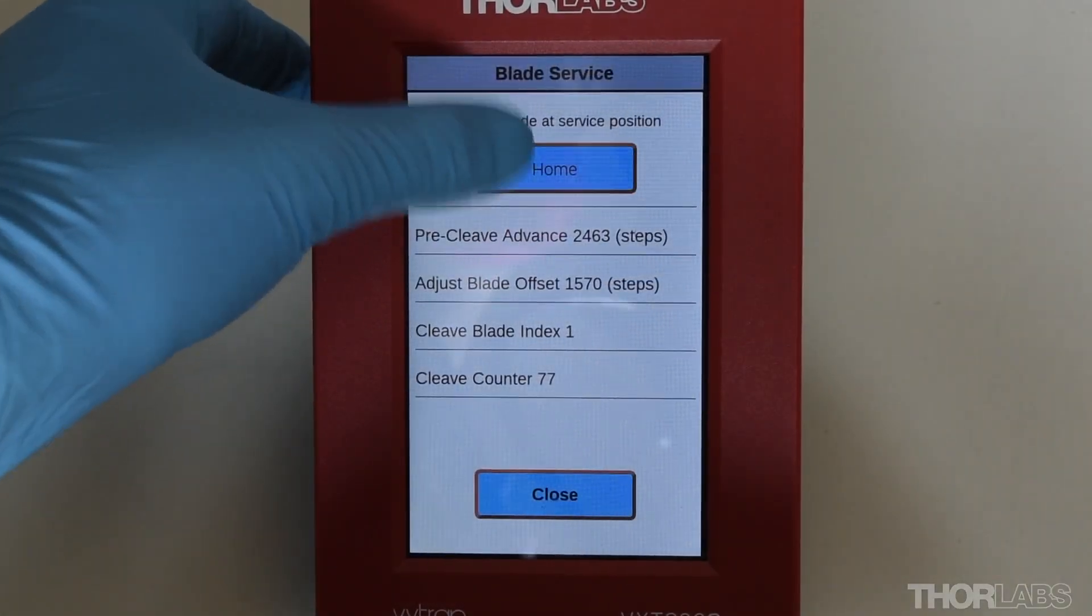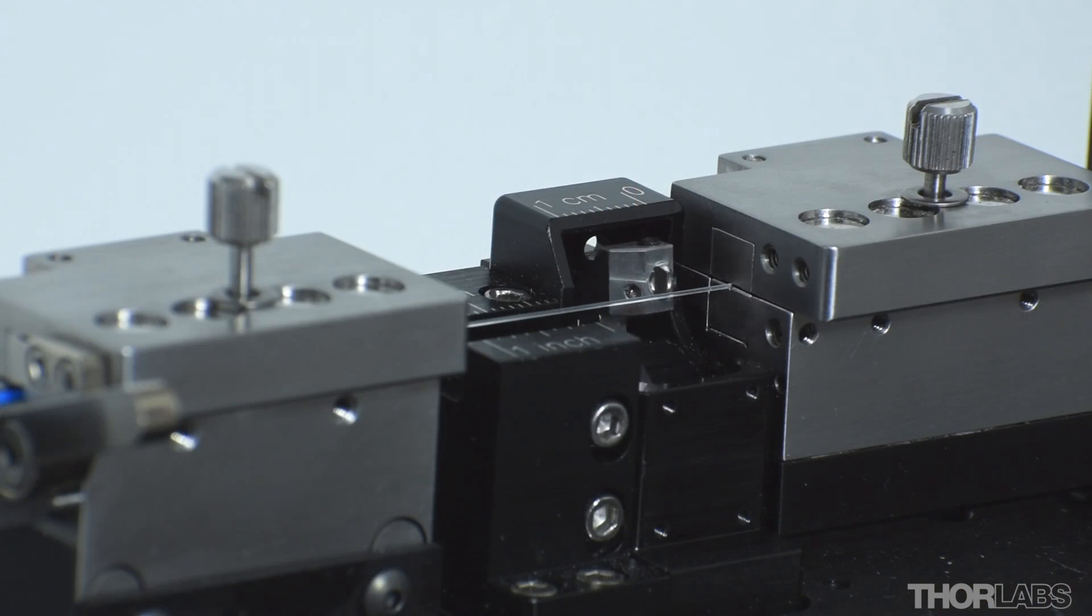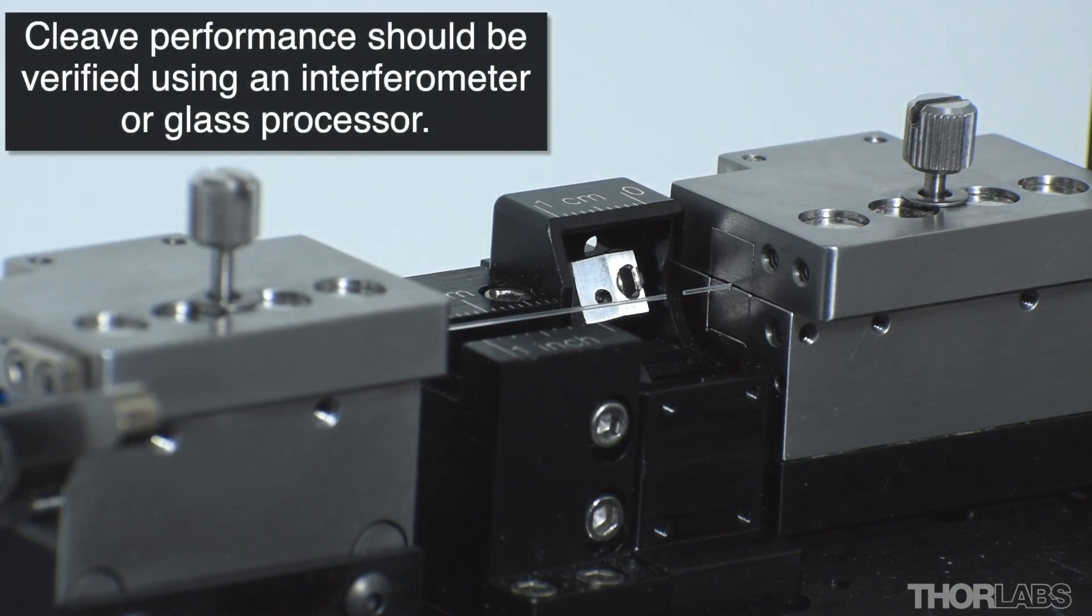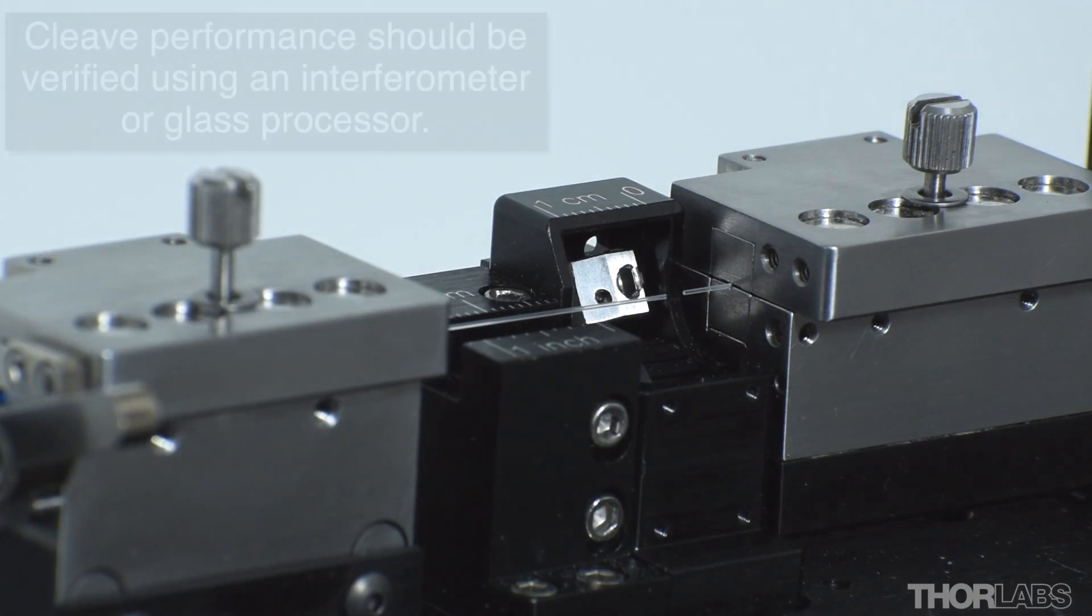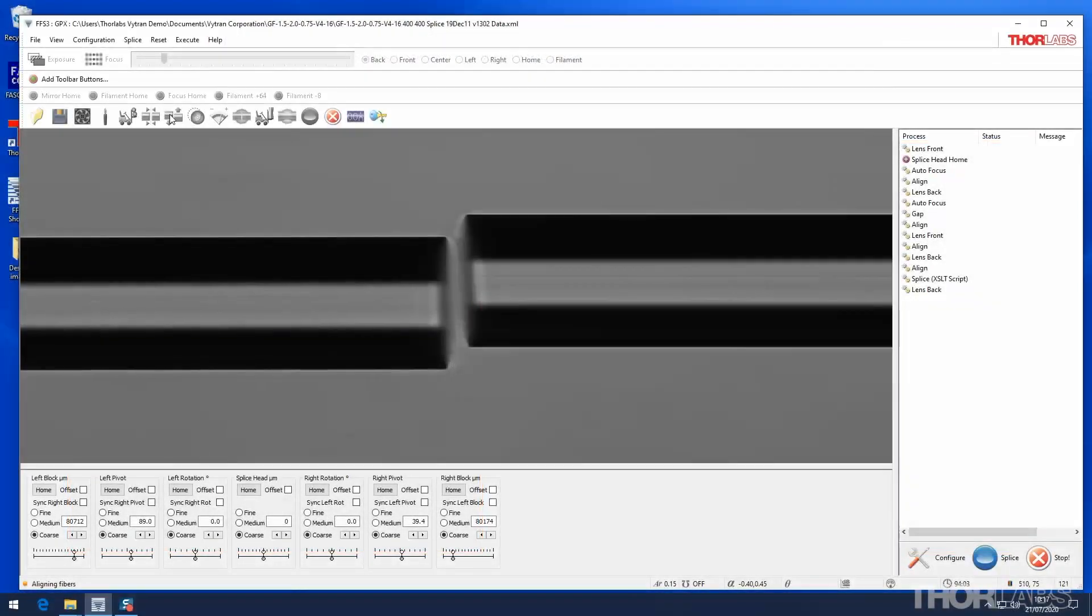After cleaning, use the handset to return the blade to its home position. Now load a new fiber into the unit and try cleaving once more. The cleaver performance can be verified by observing the cleaved fiber on an interferometer or using a glass processor.